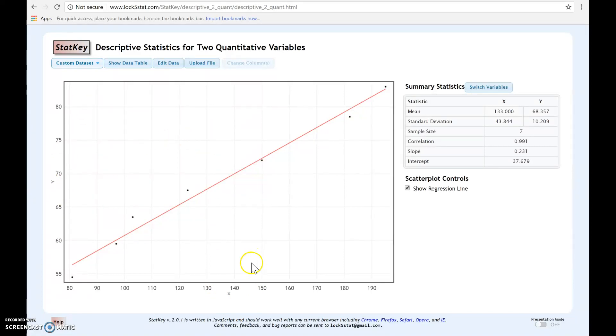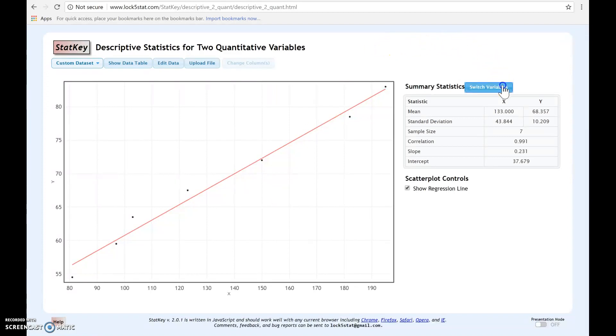Well, let's say that you actually accidentally entered these backwards. You had entered the temperature as the x and the chirp as the y. Well, no need to worry. You don't have to go and put in the data again.